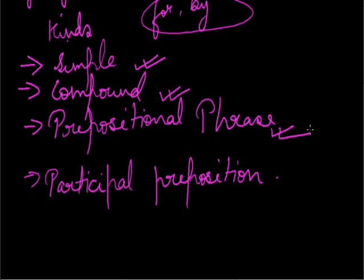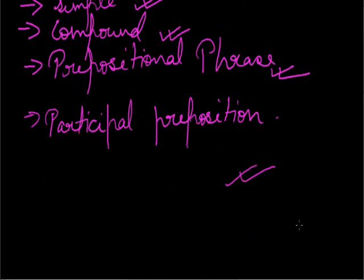For example: 'Please don't park your car in front of the gate' — here 'in front of' is a prepositional phrase. 'She went away in spite of my request' — here 'in spite of' is the prepositional phrase. Participle preposition examples: regarding, concerning, etc. Example: 'I want to talk to you regarding the changes in the timetable' — here the preposition is 'regarding.'